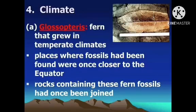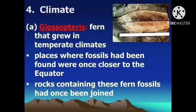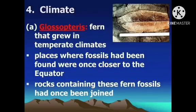The last evidence is climate. Glossopteris is a fern that grew in temperate climates. The places where these fossils had been found were once closer to the equator, and rocks containing these fern fossils had once been joined. Fossilized leaves of Glossopteris, an extinct plant, were found in 250-million-year-old rocks in the continents of southern Africa, Australia, India, and Antarctica — now separated by wide oceans. The large seeds of these plants could not possibly travel long distances by wind or survive a rough ocean crossing.